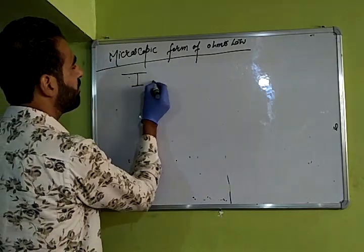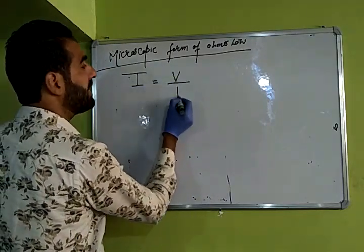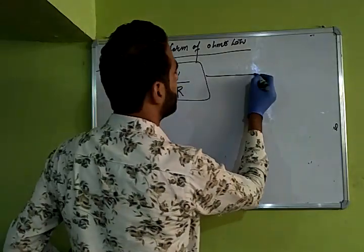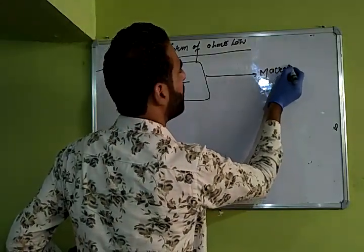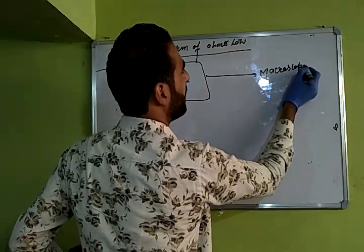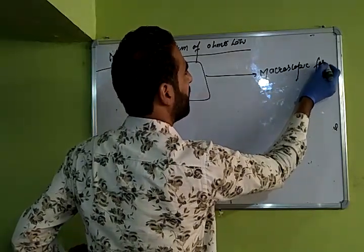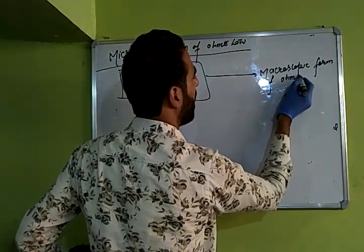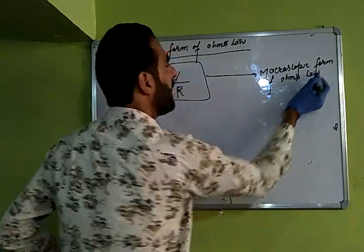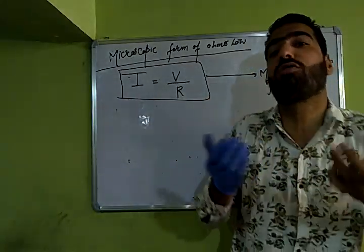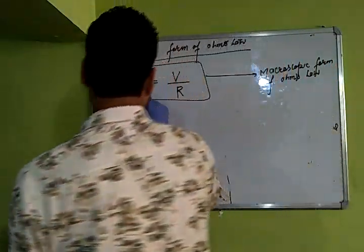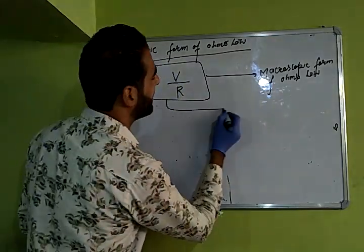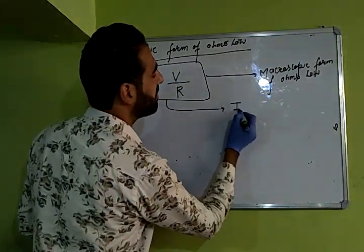That is: I is equal to V by R. This is what you have studied. This is known as the macroscopic form of Ohm's law. Why macroscopic? Because whatever quantities you have, you can measure them directly by certain instruments.